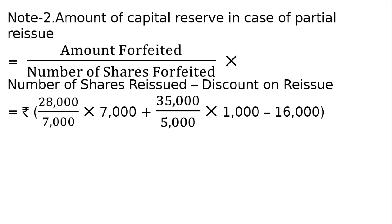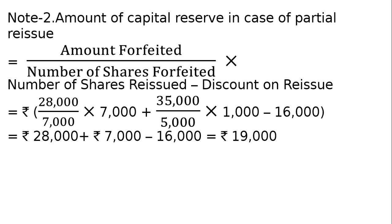₹28,000 is the amount collected on Rohit's shares (7,000 shares at ₹4 = ₹28,000), and Rohit's shares were totally reissued. For Namit, out of 5,000 shares forfeited, only 1,000 were reissued. He paid ₹4 on application and ₹3 on first call, totalling ₹7 per share, so 5,000 × ₹7 = ₹35,000 upon 5,000 divided by 1,000 shares, minus discount of ₹16,000. Capital reserve is ₹19,000, as given in the book.